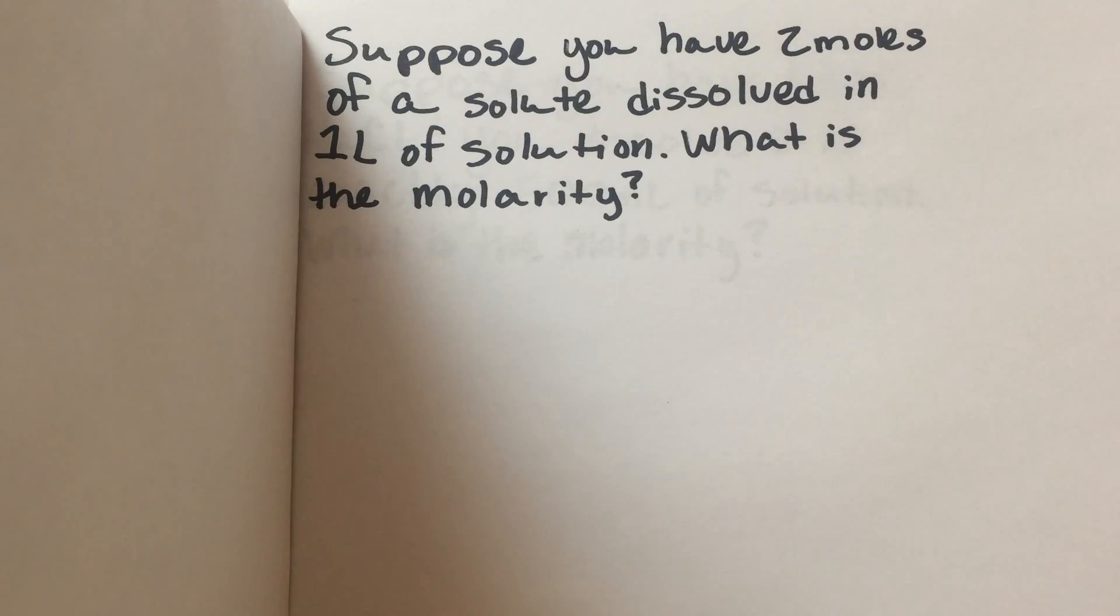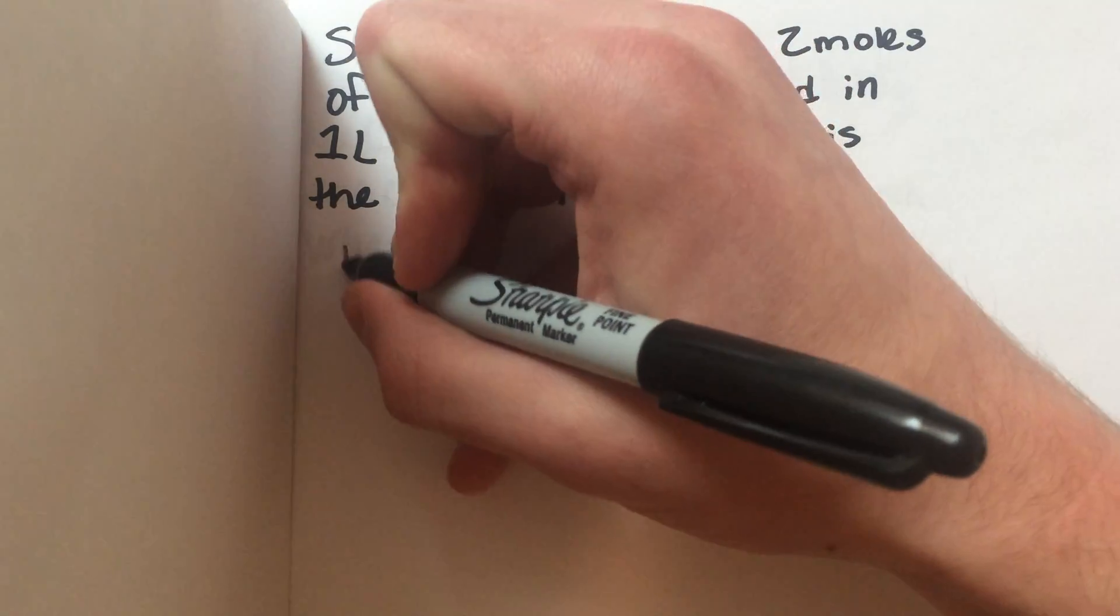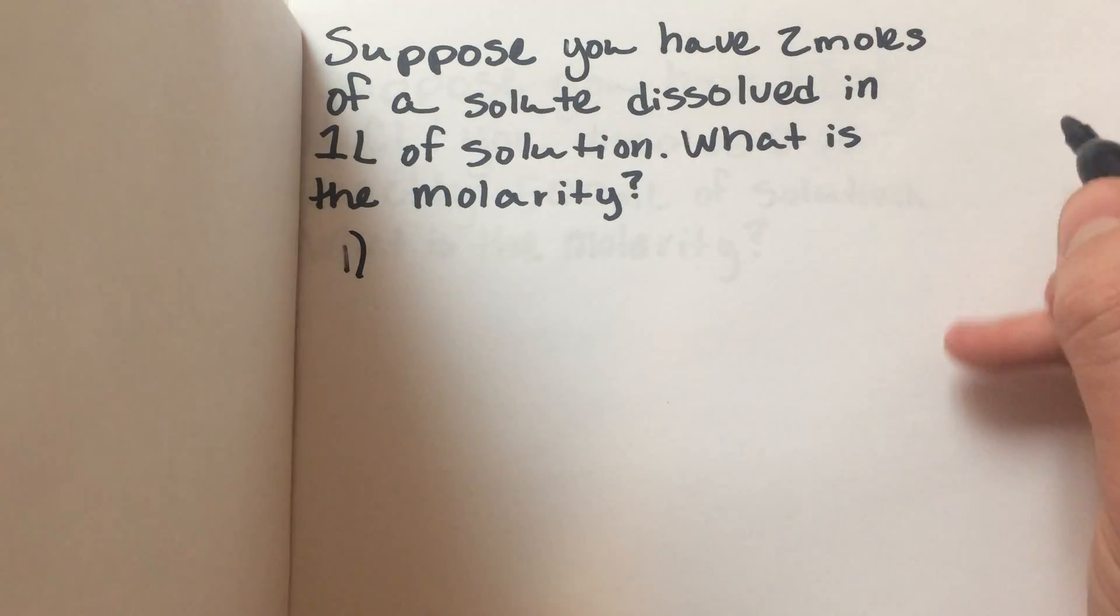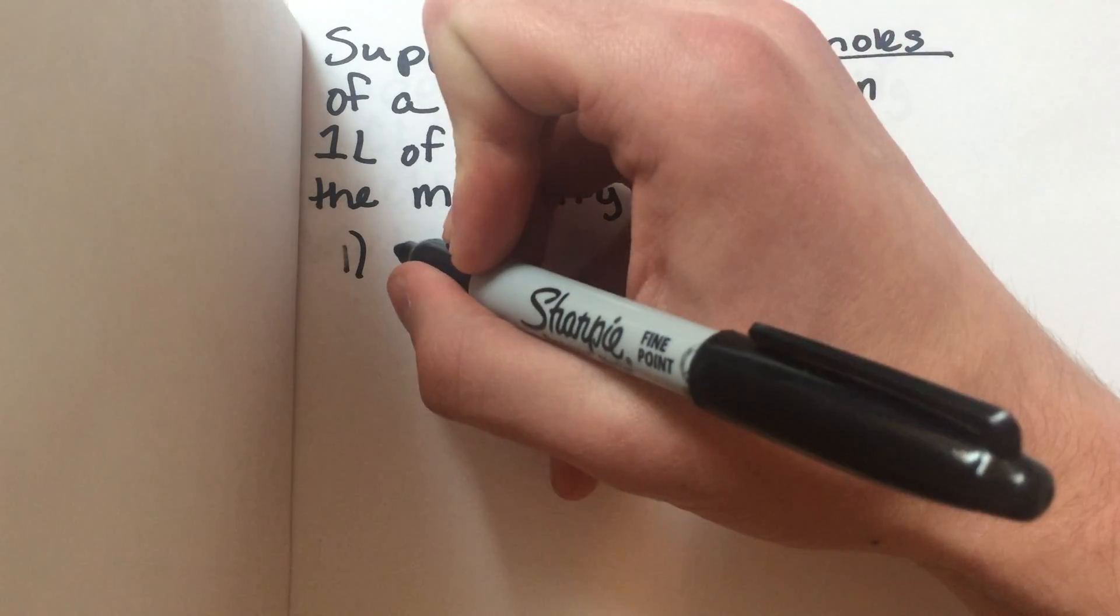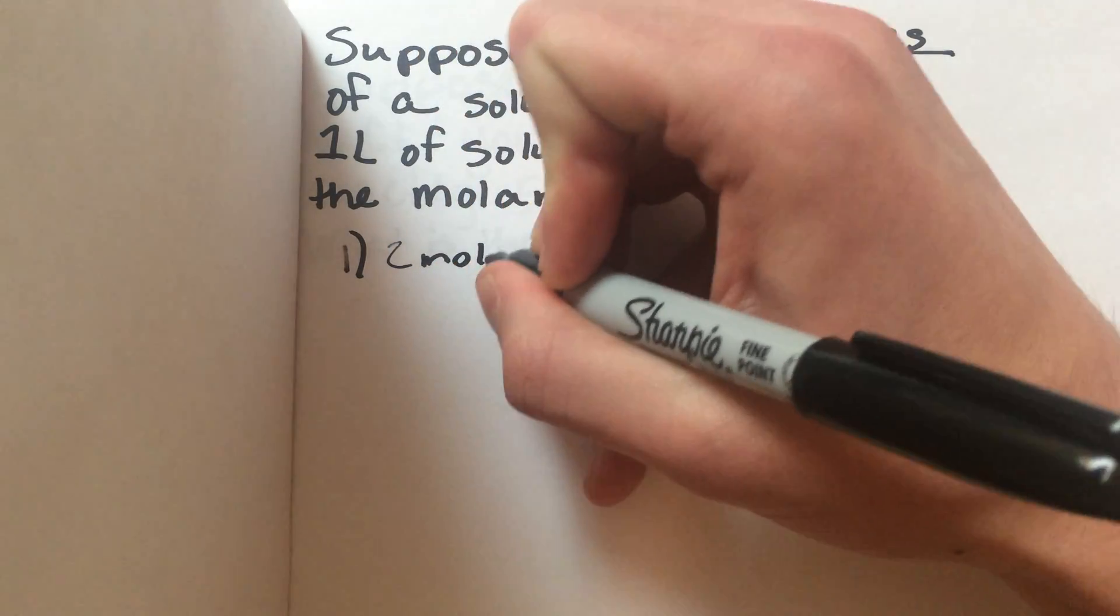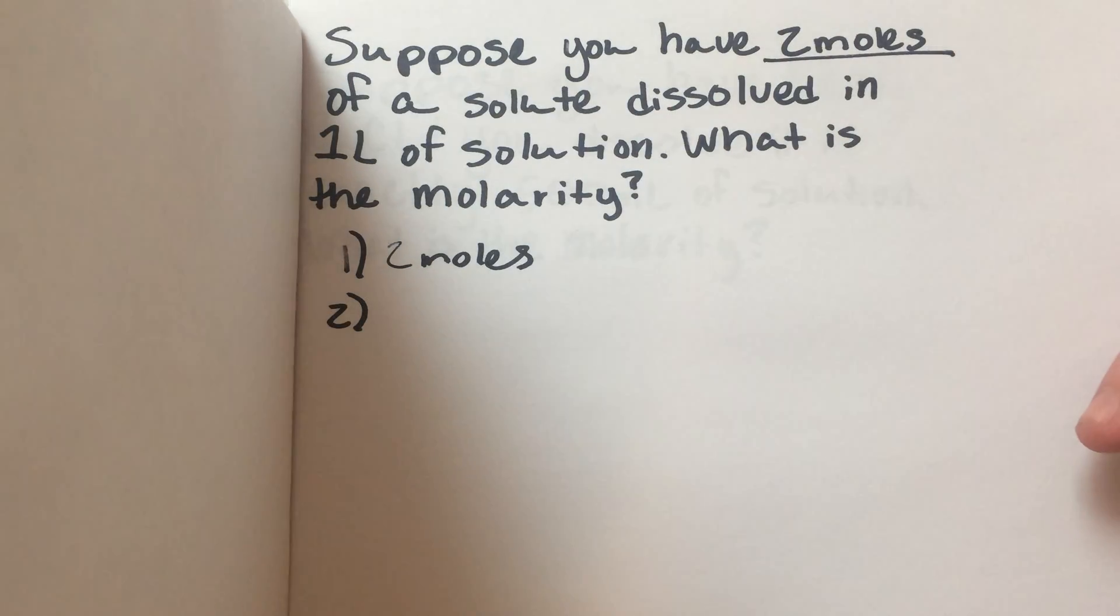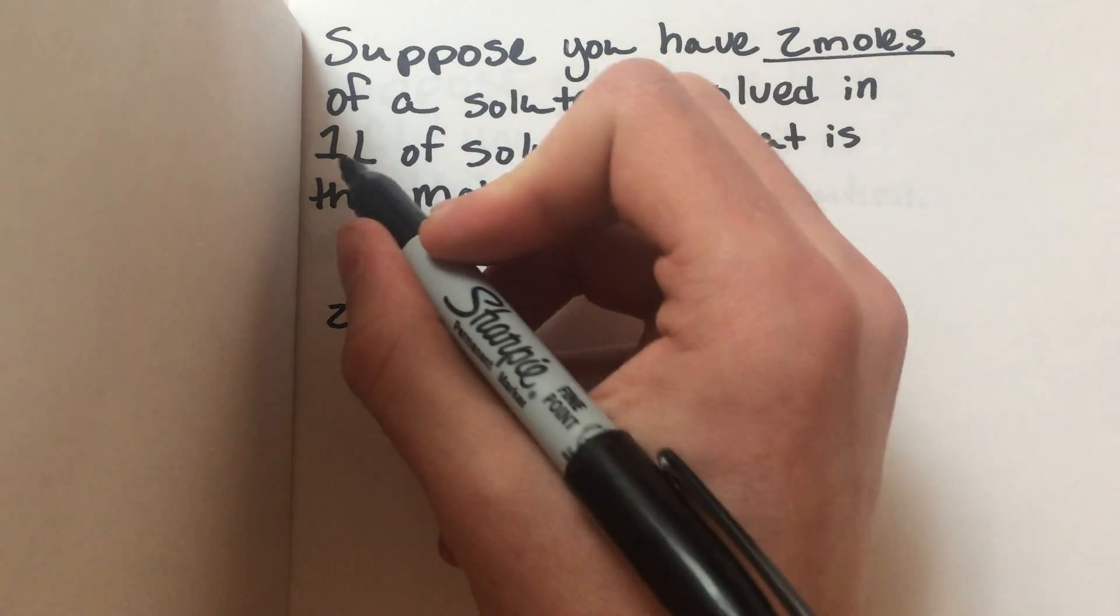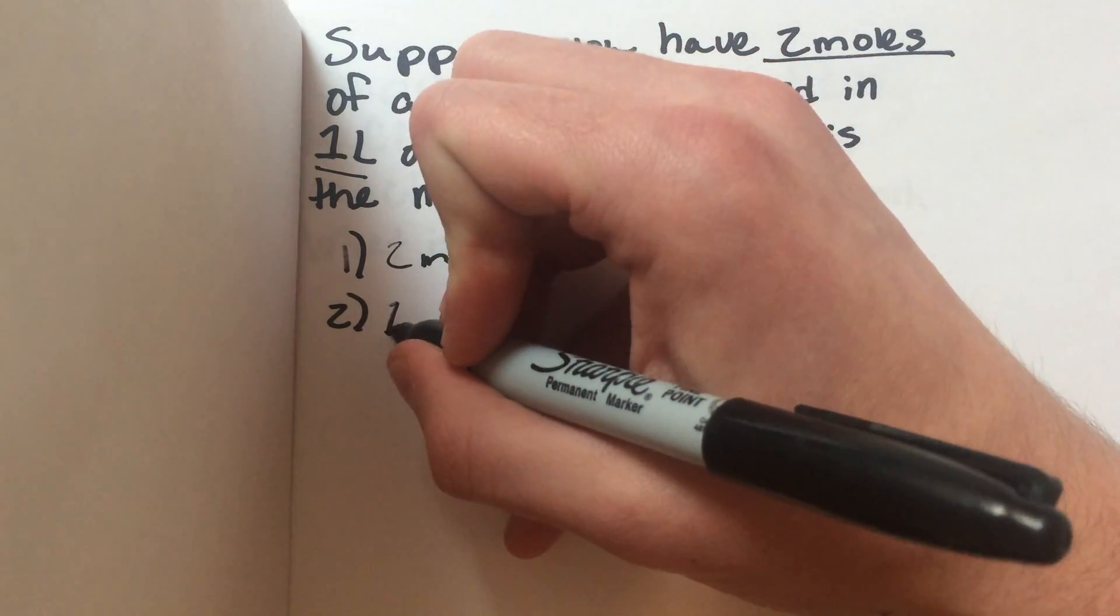Let's break this down into a few simple steps. Number one, find how many moles you have. It says right here that you have two moles. Step two, find how many liters you have. Right here it says you have one liter.